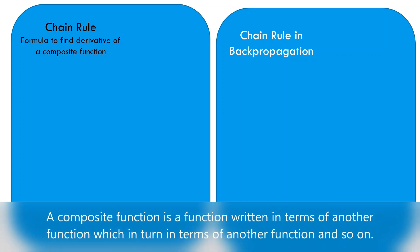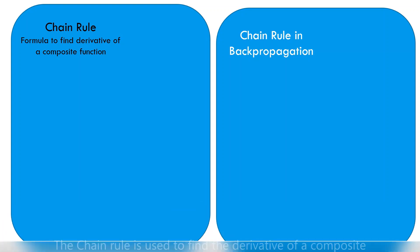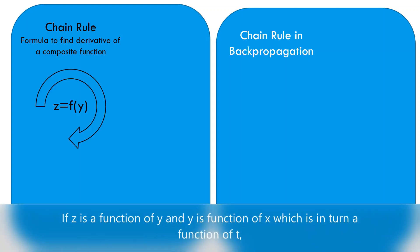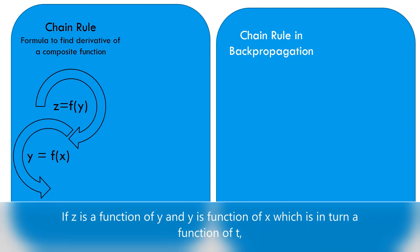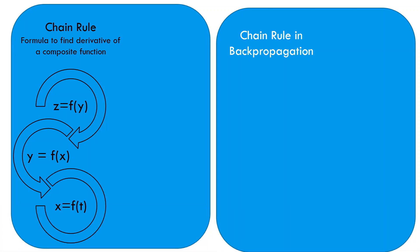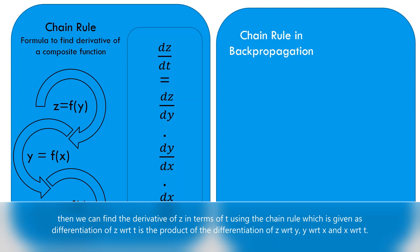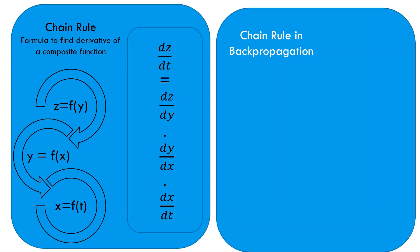A composite function is a function written in terms of another function, which is in turn in terms of another function, and so on. The chain rule is used to find the derivative of a composite function. If z is a function of y, and y is a function of x, which is in turn a function of t, then the derivative of z with respect to t is the product of dz/dy, dy/dx, and dx/dt.